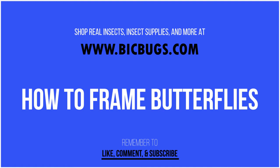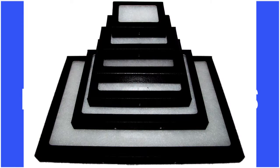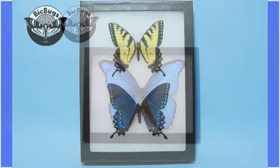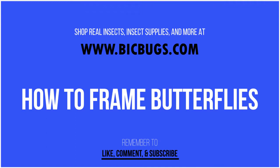Riker frames, also known as Riker mounts or butterfly boxes, are a style of frame that displays your insects while also protecting them from damage. This is the type of frame we use here at BicBugs to frame all of our insects. You can also purchase them separately on our website www.bicbugs.com.